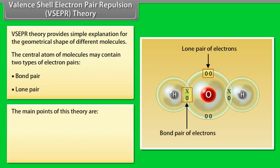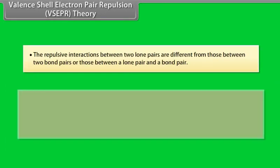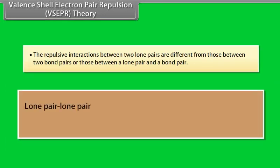The main points of this theory are: the electron pairs surrounding the central atom repel each other; the geometry and shape of the molecule depend upon the number of electron pairs in the valence shell of the central atom; and the repulsive interactions between two lone pairs are different from those between two bond pairs or those between a lone pair and a bond pair.